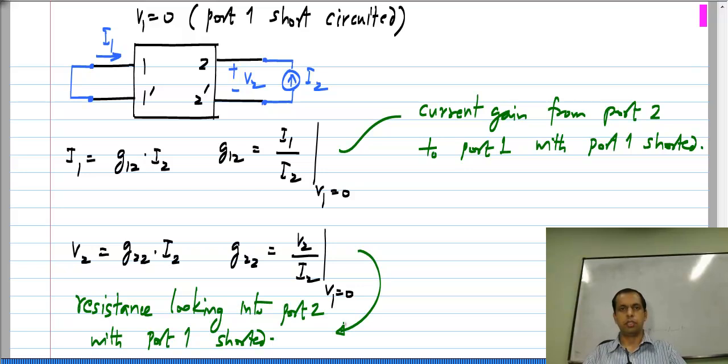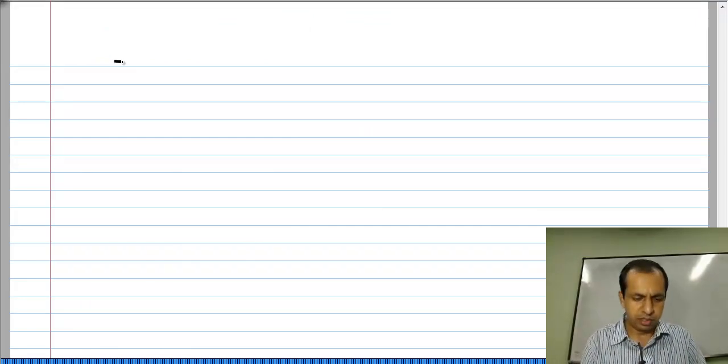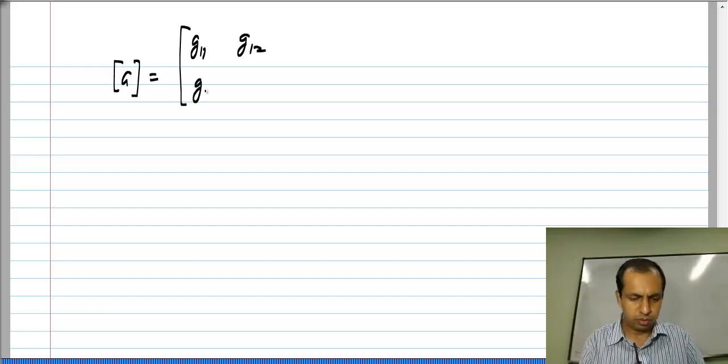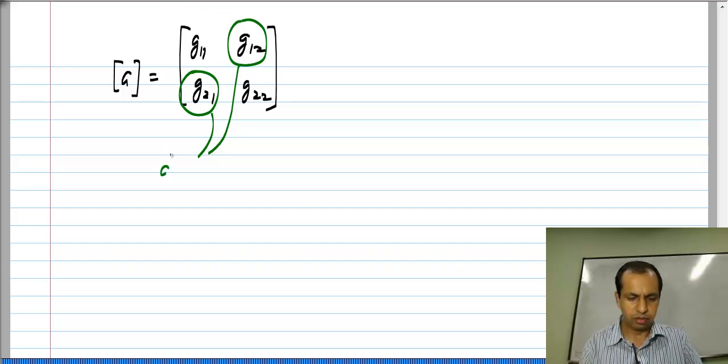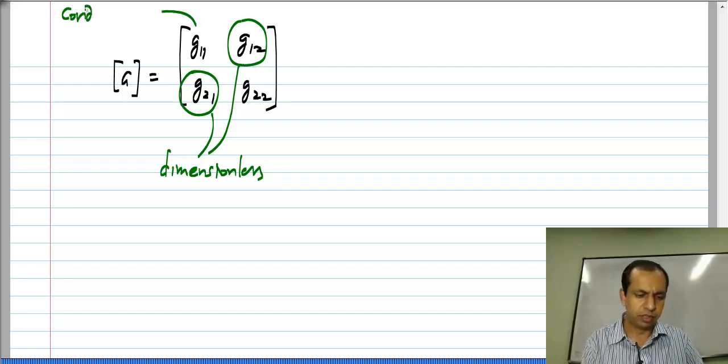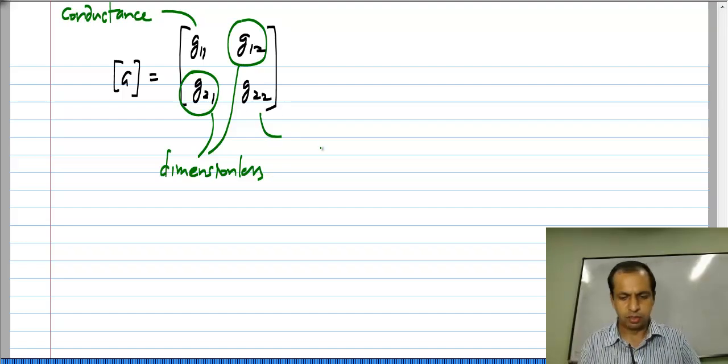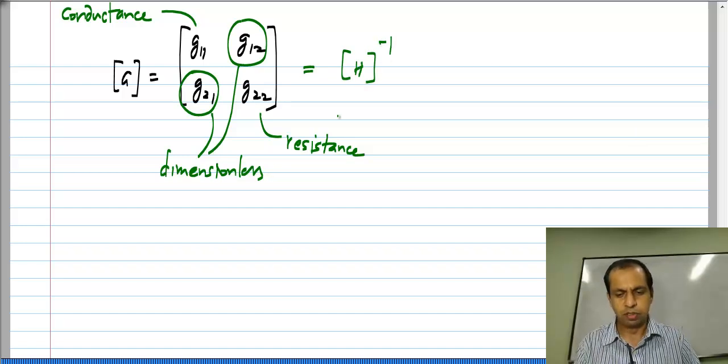Very similar to all the other parameters, the measurement techniques are. Now, the G parameter matrix is G11, G12, G21, G22 where these two are dimensionless and this one is a conductance and that one is a resistance. And from the definitions it must be obvious that this is the inverse of the H parameter matrix. Z and Y are inverses of each other and G and H are inverses of each other.